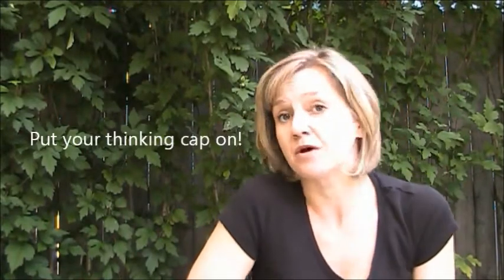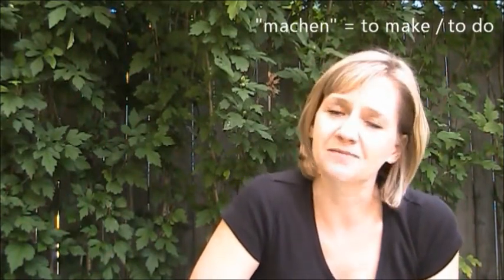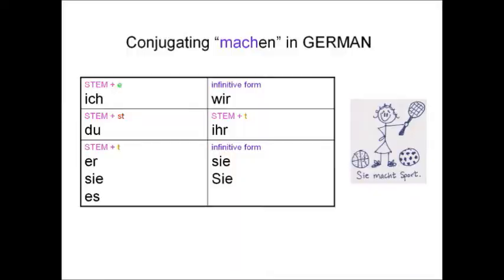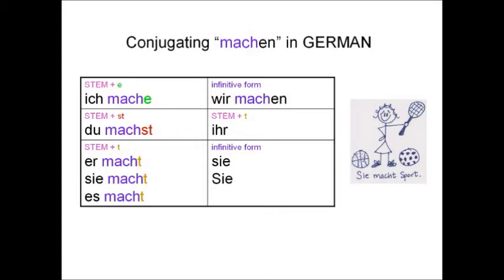Now I'm going to give you some weak, regular German verbs and you are going to conjugate them. First verb: machen, which means to make or to do. See if you can follow the pattern I just told you to conjugate machen. Ich mache. Du machst. Er macht. Wir machen. Ihr macht. Sie machen. No problem — you totally got this.